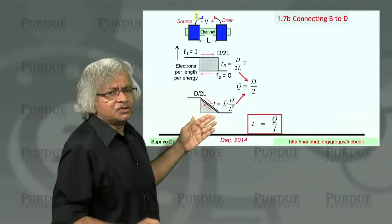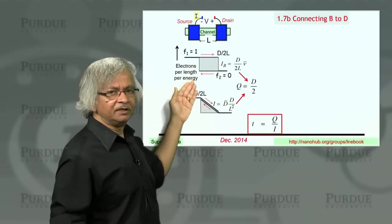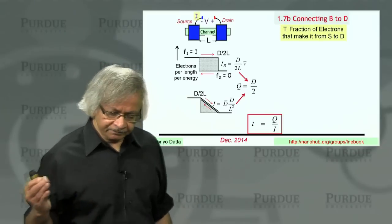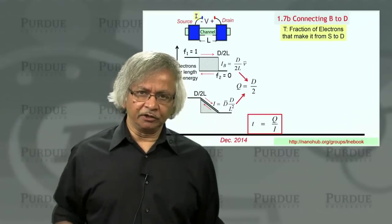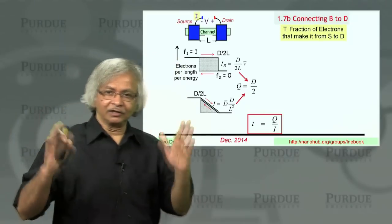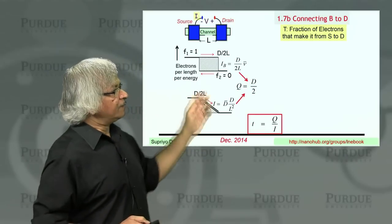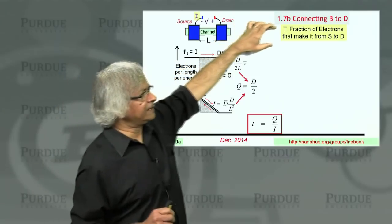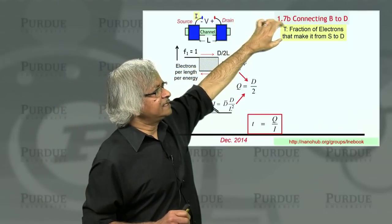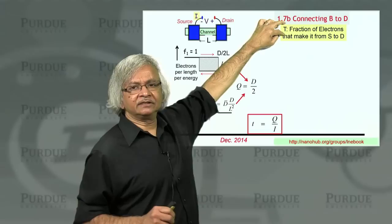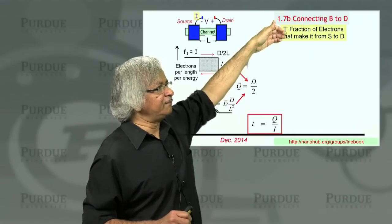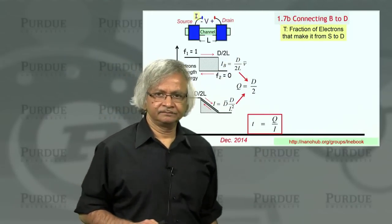So what happens in a situation that's kind of intermediate between the two? This is something we'll talk more about in the third unit of this course, when we talk about what and where is the voltage. But for the moment, let me give you a simple description. Let's say T, we use this capital T to define this fraction of electrons that make it from source to drain.